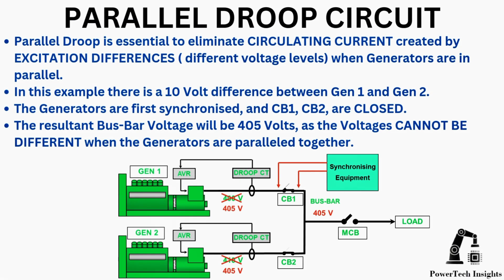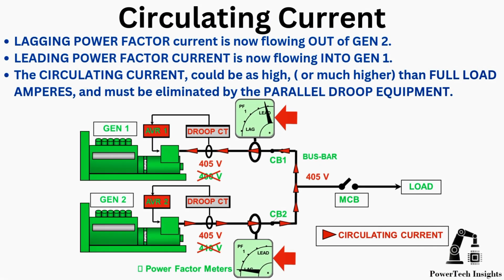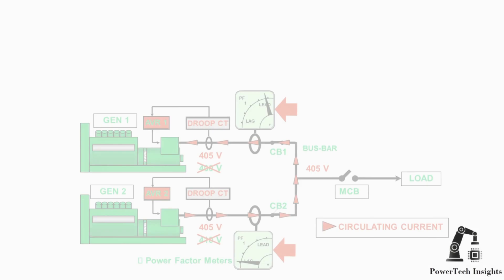Parallel droop circuit. Parallel droop is essential to eliminate circulating current created by excitation differences and different voltage levels when generators are in parallel. In this example, there's a 10-volt difference between Gen 1 and Gen 2. The generators are first synchronized and CB1, CB2 are closed. The resultant bus bar voltage will be 405 volts, as the voltages cannot be different when the generators are paralleled together. The circulating current could be as high or much higher than full-load amperes and must be eliminated by the parallel droop equipment.